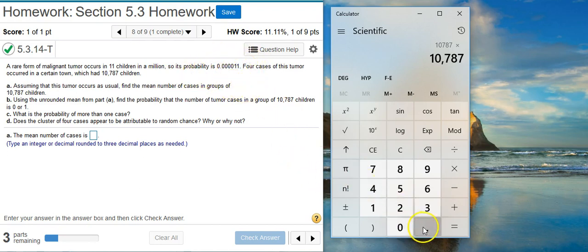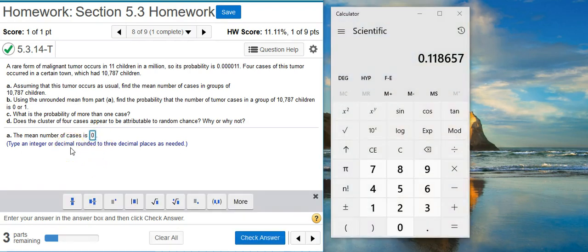There's the mean number of cases. You can see it's pretty small. I'm asked to round to three decimal places, so I'm going to do that.